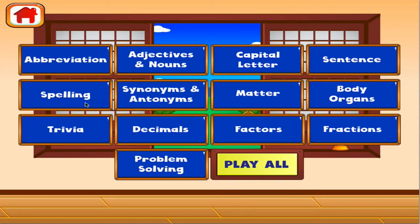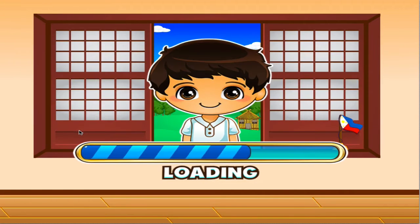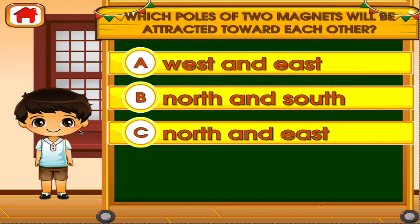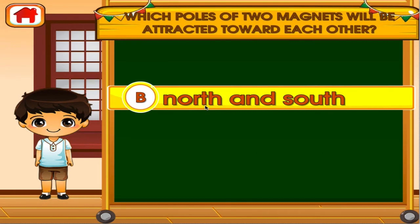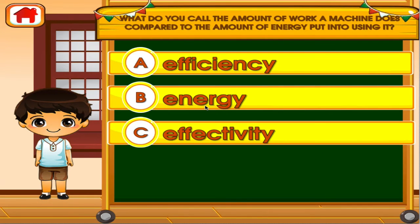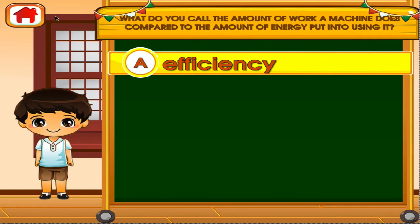Choose the activity you want to play. Trivia. Tap the correct answer. Woohoo! Good job! You got it right! Tap the correct answer. Good job! That's another right!